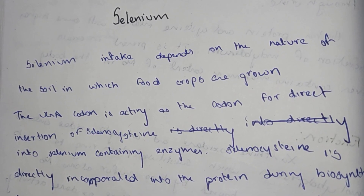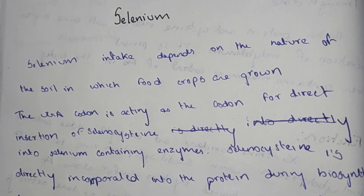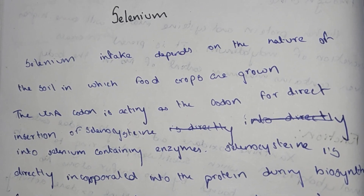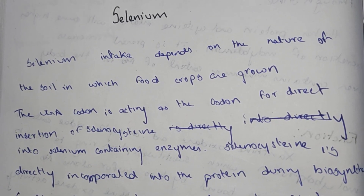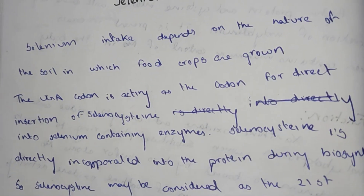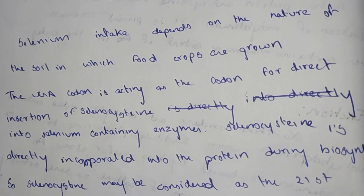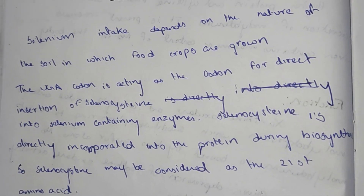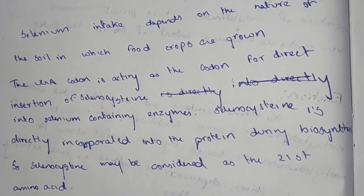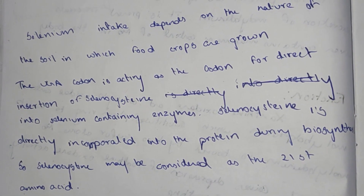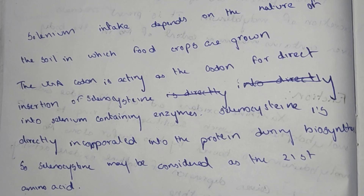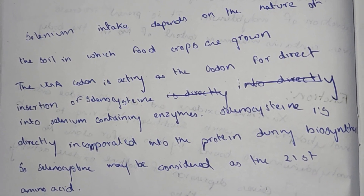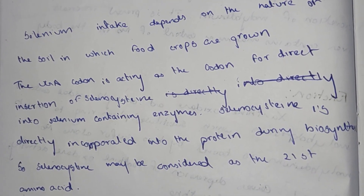The UGA codon acts as a codon for the direct insertion of selenocysteine into selenium-containing enzymes. Selenocysteine is directly incorporated into protein during biosynthesis, and may be considered the 21st amino acid.